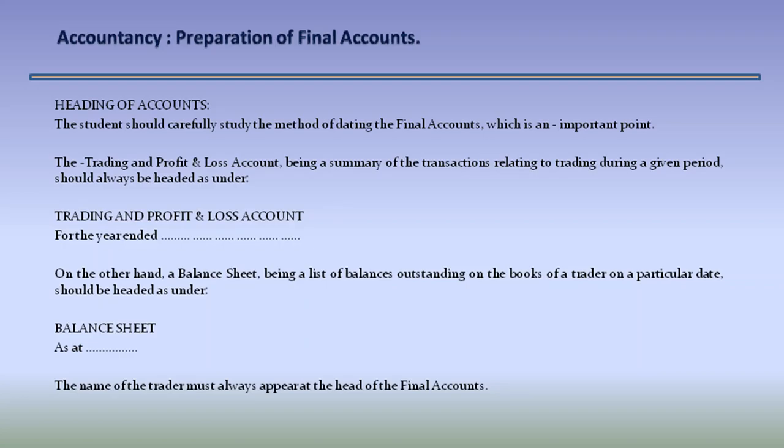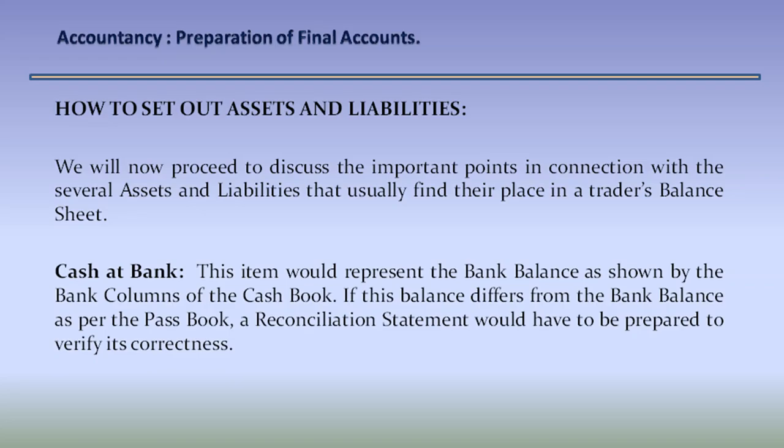How to set out assets and liabilities? We will now proceed to discuss the important points in connection with the several assets and liabilities that usually find their place in a trader's balance sheet. Cash at bank: this item would represent the bank balance as shown by the bank columns of the cash book. If this balance differs from the bank balance as per the passbook, a reconciliation statement would have to be prepared to verify its correctness.